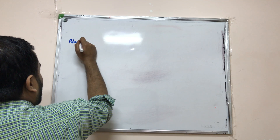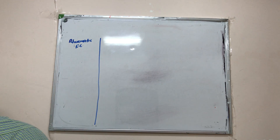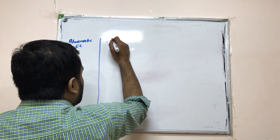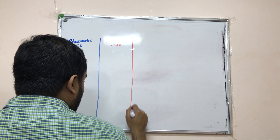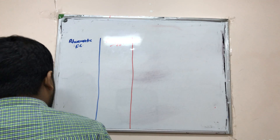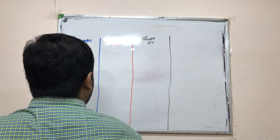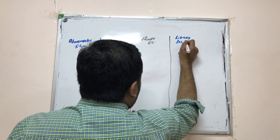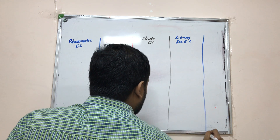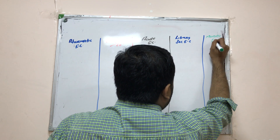In the table we will differentiate: rheumatic endocarditis, SAB (subacute bacterial endocarditis), acute endocarditis, Libman-Sacks endocarditis, and marantic endocarditis.